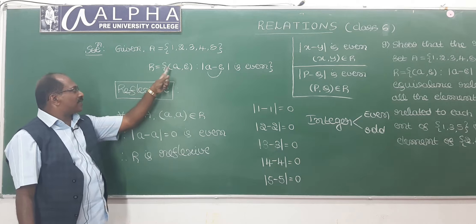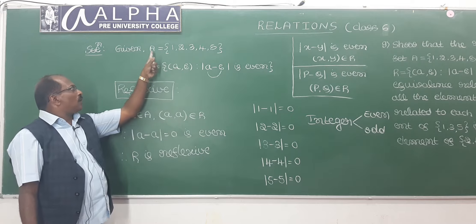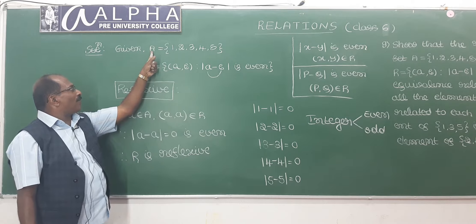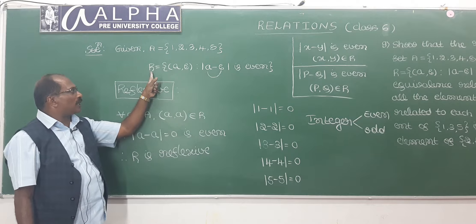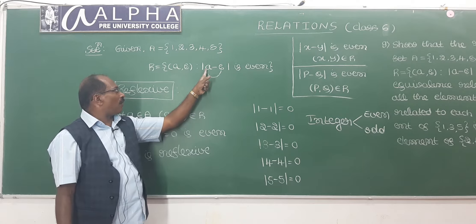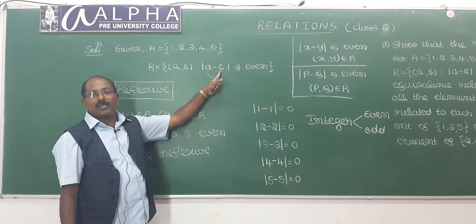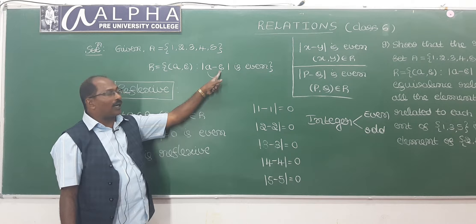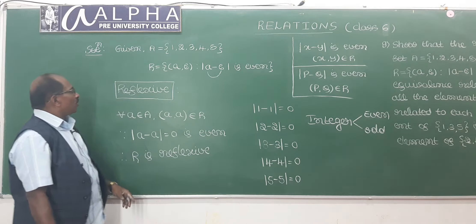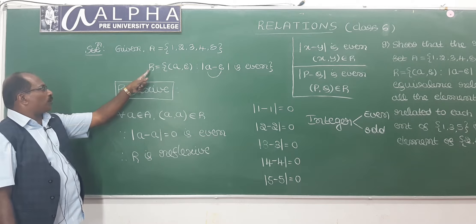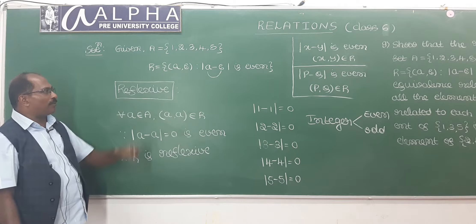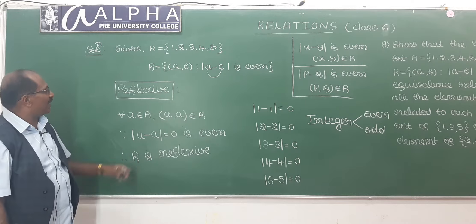Here a relation R is defined like this: on the given set A, the ordered pair (a, b) of A×A belongs to the relation R if |a - b|, meaning the modulus of the first coordinate minus the second coordinate of the ordered pair, is even. Now we have to show that R is reflexive, symmetric, and transitive, because we have to show that R is an equivalence relation.